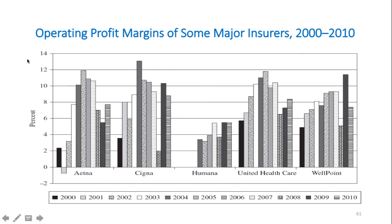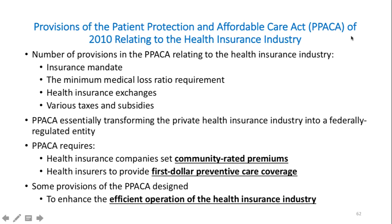Looking at the operating profit margins of major insurers from 2000 to 2010, there was an increase in profits in most years up to 2010, followed by a decrease in most private insurers after that. The Affordable Care Act contains a number of provisions relating to the health insurance industry based on insurance mandates, which require that an insurance company or health plan covers specific benefits, providers, or patient populations.